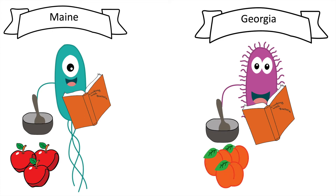Bacteria are similar. While the genotype — the genetic material, or the cookbook — may not change that much, the phenotype, the expression of the genetic material or the food that was made, depends greatly on the environment.